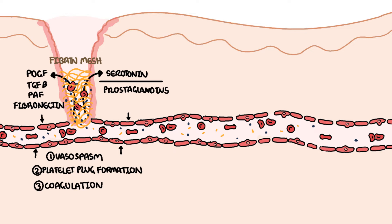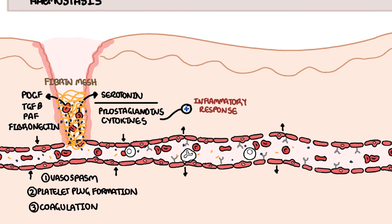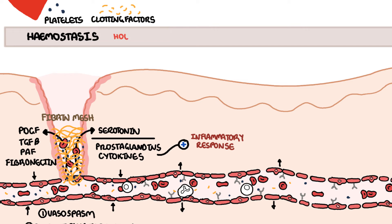In addition, injured endothelial and tissue immune cells release prostaglandins and cytokines, which promote the inflammatory response. The inflammatory response involves an increase in adhesion molecules to allow infiltration of inflammatory cells, cytokines to attract the inflammatory cells, as well as vasodilation and increased vascular permeability to facilitate transport of inflammatory cells. This all leads to the second phase of wound healing, which is inflammation.